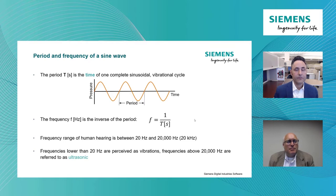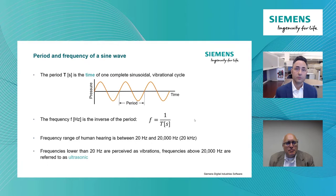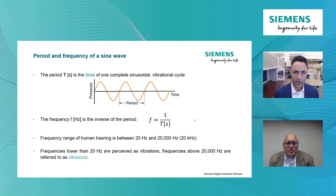Looking at this sine wave, there are some important characteristics — not only the amplitude, but also the period. The period is in the time domain: the amount of time it takes the sine wave to go through one cycle, measured in seconds. The inverse of that period is the frequency — how many cycles we get in one second. We most often work with frequency when talking about sound, since amplitude and frequency are the primary descriptors. We don't often work with period directly.